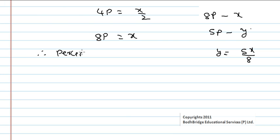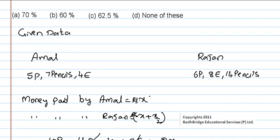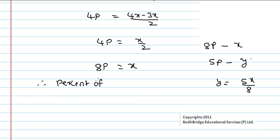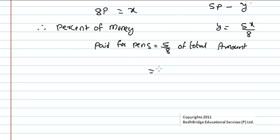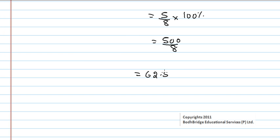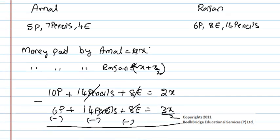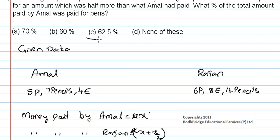Therefore, the percentage of money paid for pens is 5 by 8 of the total amount. So that is 5 by 8 into 100 percent, which is 500 divided by 8, giving 62.5 percent. So Amal is spending 62.5 percent of his amount on pens. From the options we have option C, that is 62.5 percent, so option C is correct.